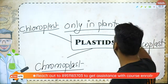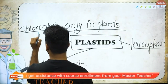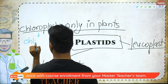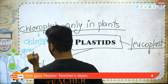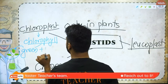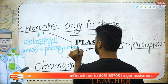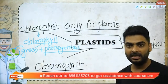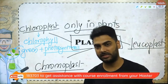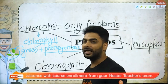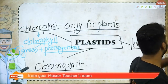When I talk about chloroplast, it is present in the plant cell. It contains chlorophyll, which is responsible for the green color of plants and also for photosynthesis. Magnesium is the metal that enables the chlorophyll to trap the sunlight to carry out photosynthesis.